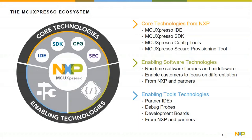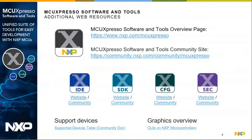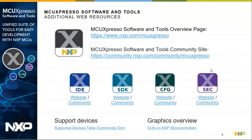As part of these enabling software technologies, an evaluation version of Crank's Storyboard is available inside the MCU Expresso SDK for supported i.MX RT series devices, making the experience of using Storyboard with NXP devices quite seamless. More information on MCU Expresso software, tools, and graphics on NXP microcontrollers is available via links in the presentation. With that, I'll pass it off to Scott to tell you more about Crank Software.